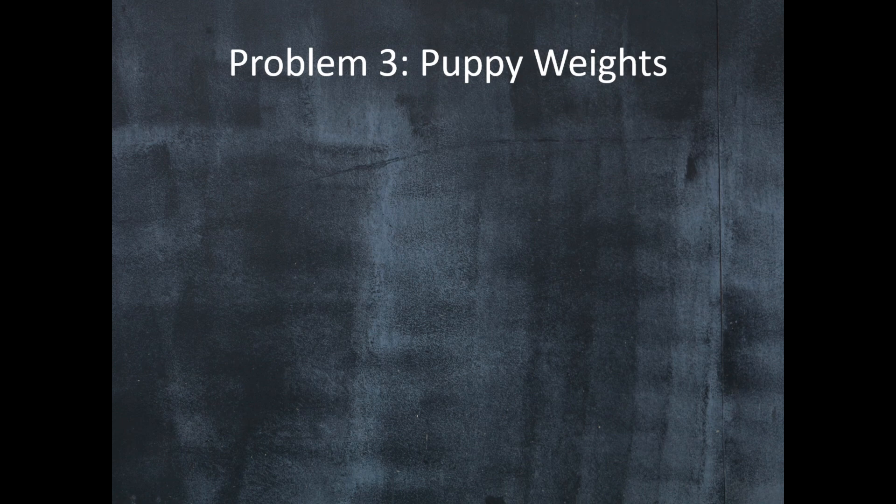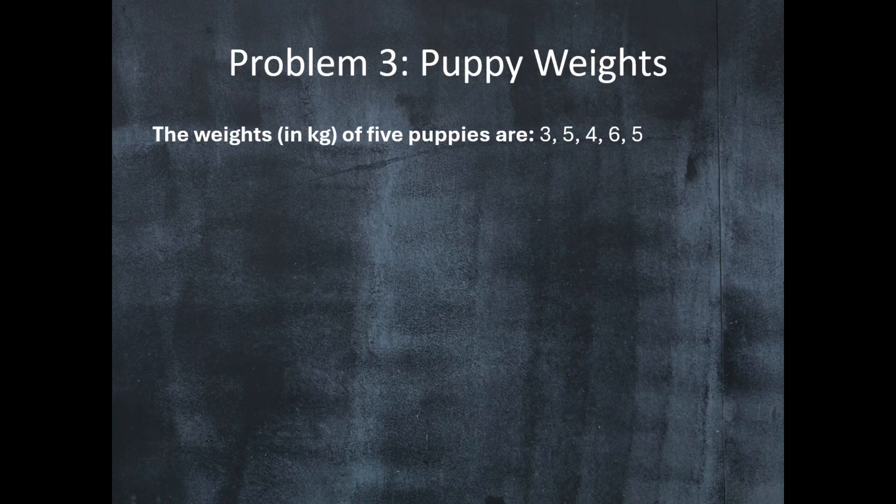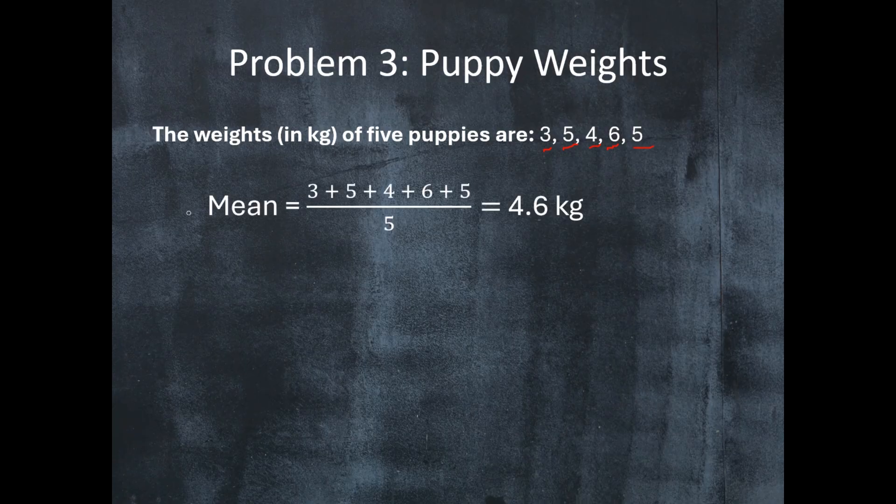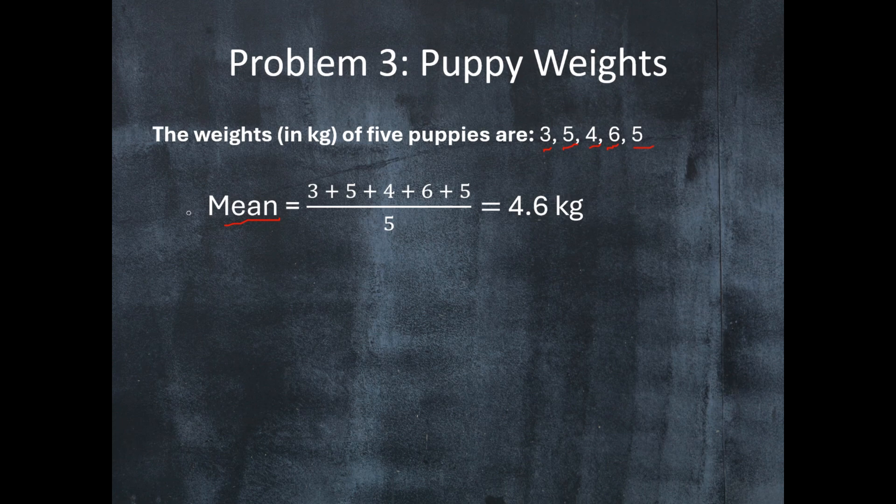Let's have another problem. This time it's about puppy weights. The weights in kilograms of five puppies are: 3 kilograms, 5 kilograms, 4 kilograms, 6 kilograms, and 5 kilograms. The mean for the five puppies is 4.6 kilograms.